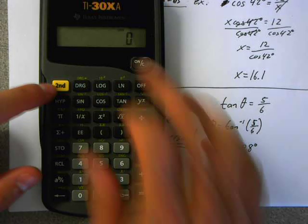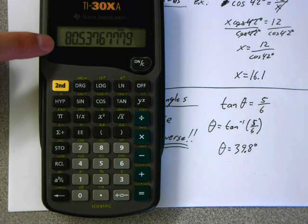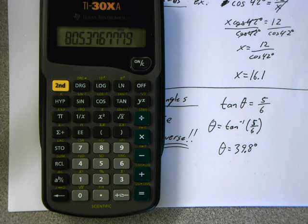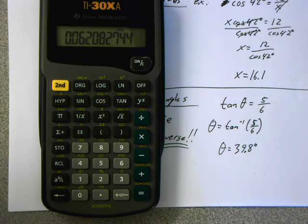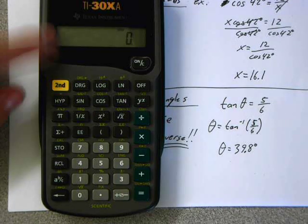If I do, though, 5 divided by 6 and hit shift tan, what just happened there? Well, right there, it's now just taking the inverse tan of 6. It didn't do the division first. It did the inverse tan first. And when I hit equals, things get ugly. So, make sure that when you've got one of these junky calculators,